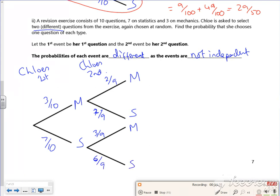So what am I after now then? Find the probability that she chooses one question of each type. Right, so I can do mechanics for the first one, stats for the second one, or I can do stats for the first one, mechanics on the second one. So I'm working out...